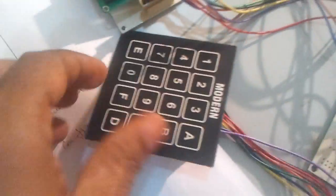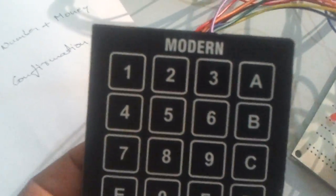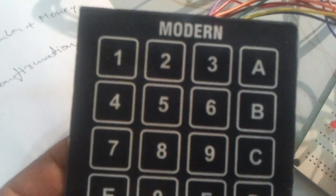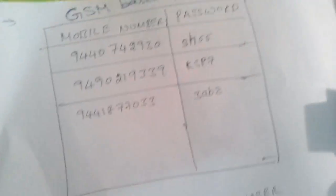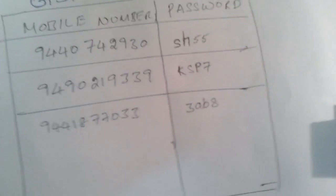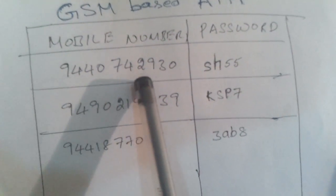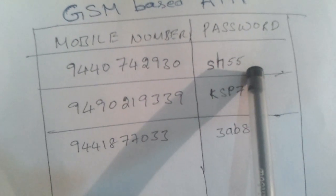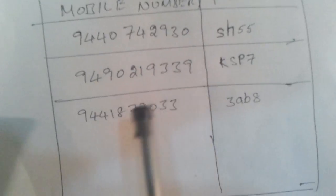As soon as the user enters the ATM system, they need to enter their registered mobile number, and an SMS will be sent to the user asking them to enter the password and the amount to be withdrawn. The system has a database containing mobile numbers and their corresponding passwords.